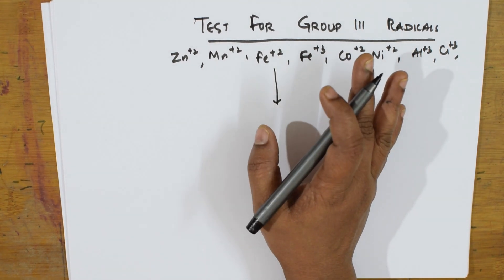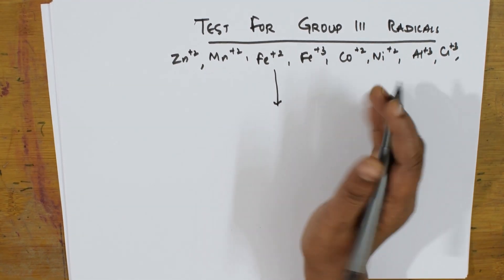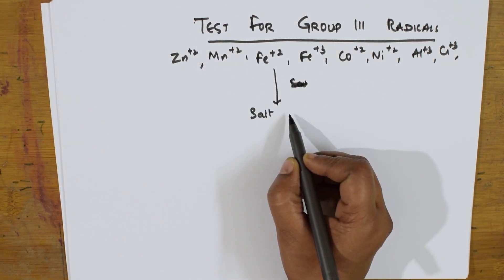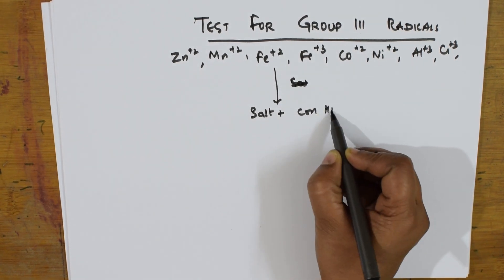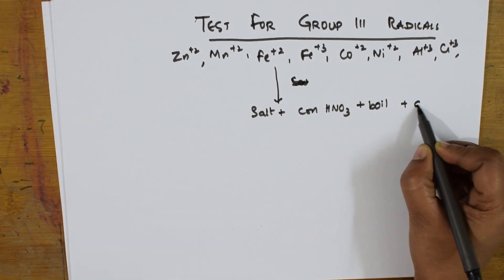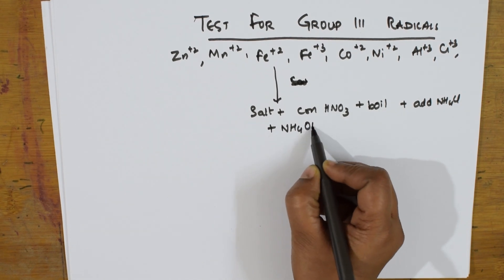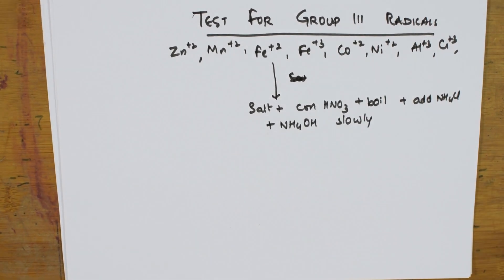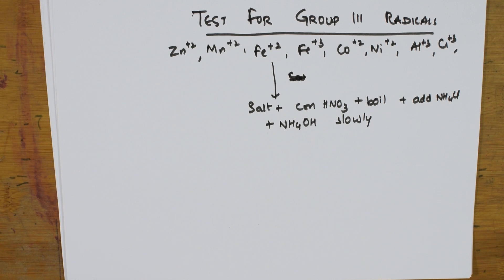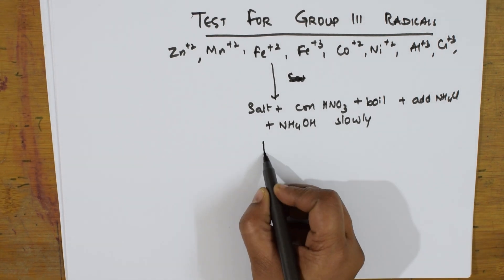The procedure begins by taking the salt solution. First, add a few drops of concentrated nitric acid to the salt. Then boil the solution, then add ammonium chloride (the group reagent), and then slowly add ammonium hydroxide. This is the first step when testing for Group 3 basic radicals. When you add these reagents, different cations give different colors.